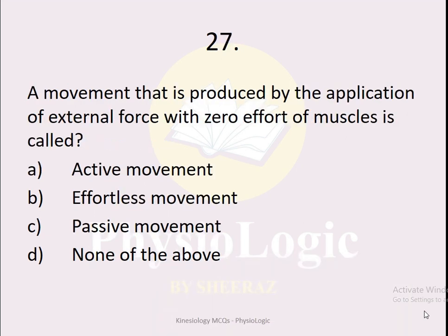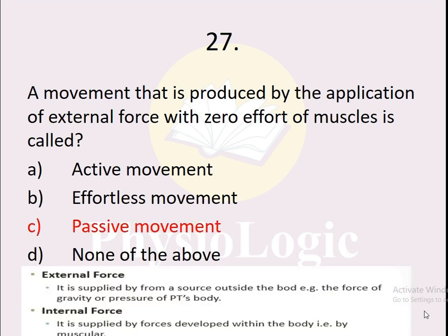MCQ number 27: A movement that is produced by the application of an external force with zero effort of muscles is called — active movement, effortless movement, passive movement, or none of the above. The correct option is passive movement. There are two types of movement: active movement results from internal force by the muscles, and passive movement occurs with the help of an external force. The correct option is option C, passive movement.